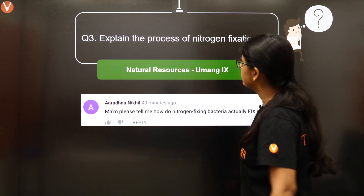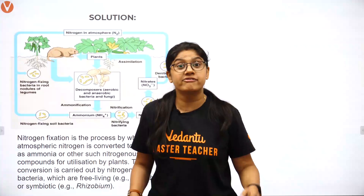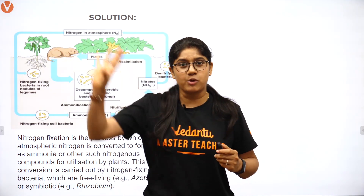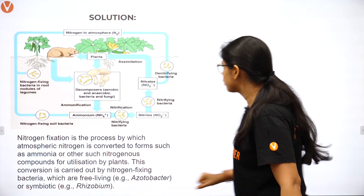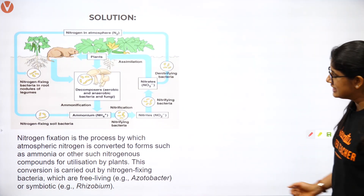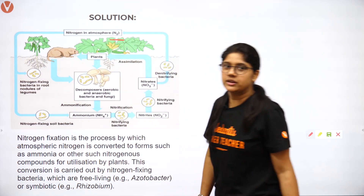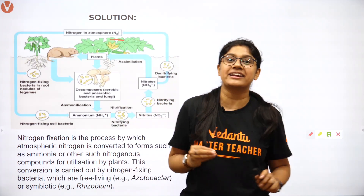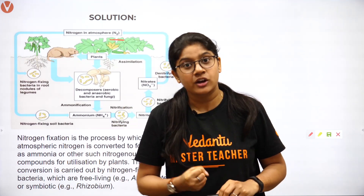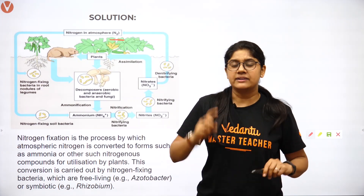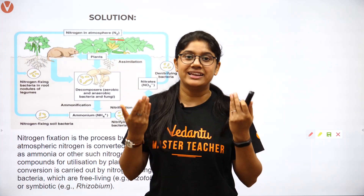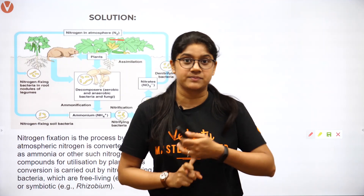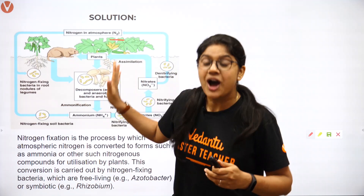Question number 3: Explain the process of nitrogen fixation. This is a very important and commonly asked question. Many of you get confused — ammonification, nitrites, nitrates — let's understand this whole process. We know that nitrogen is present in our atmosphere at the highest percentage of any gas on our planet Earth. However, this nitrogen cannot be taken directly by either plants or animals. There has to be a way. During lightning, nitrogen actually breaks down and comes to the soil surface. The other way is with the help of nitrogen-fixing bacteria, and fungi also play a small part.